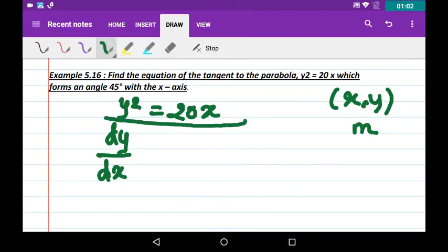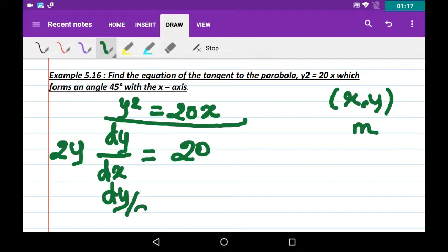When you differentiate this equation with respect to x, you will get 2y·dy/dx = 20. So dy/dx = 10/y.